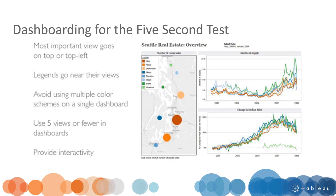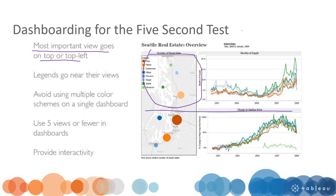First is layout — the most important views go top or top-left. Many studies show that when people look at a dashboard, this area is the part that we start from. So put your most important part to the top or top-left. If I divide the dashboard into four regions, this is definitely the number one most important part.